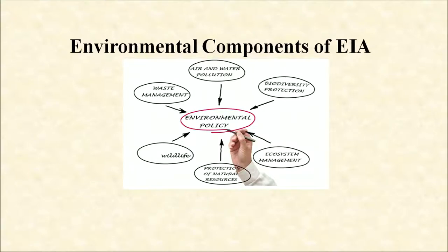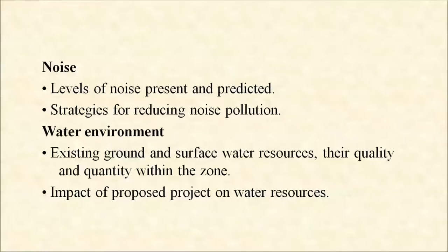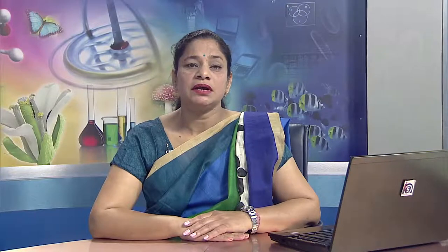The environmental components assessed in EIA include: Air environment — quality of ambient air, wind speed and direction, humidity, quantity of emissions likely from the project, impact of emissions on the area, and pollution control standards. Noise — levels of noise present and predicted, and strategies for reducing noise pollution. Water — existing ground and surface water resources, their quality and quantity, and impact of the proposed project on water resources. Biological environment — flora and fauna in the impact zone, potential damage due to effluents and landscape biological stress. Land environment — study of soil characteristics, land use and drainage patterns, likely adverse impacts, and impact on historical monuments and heritage sites.